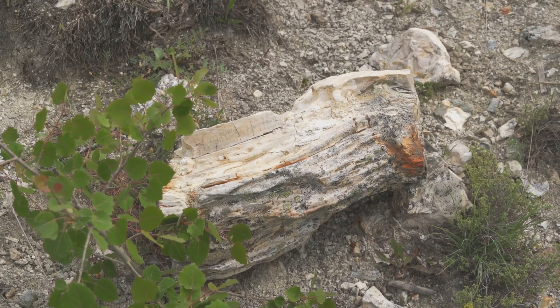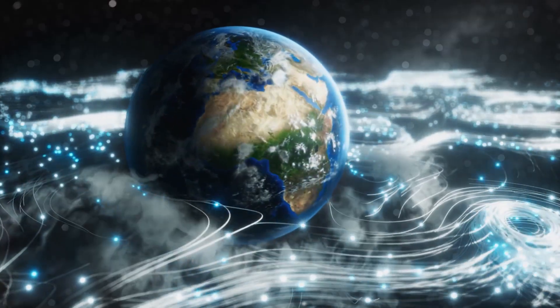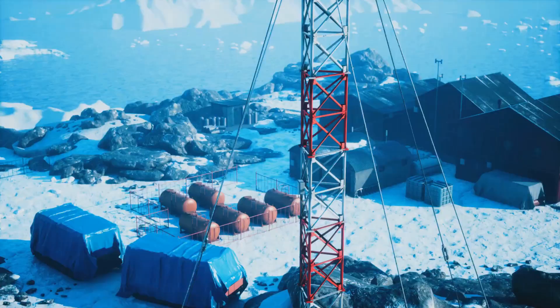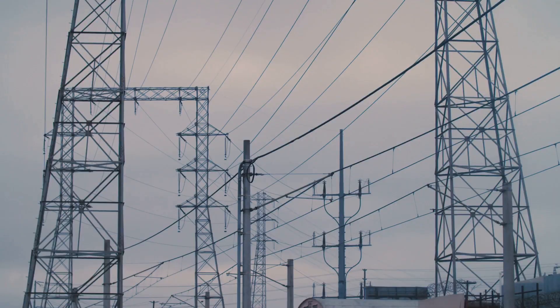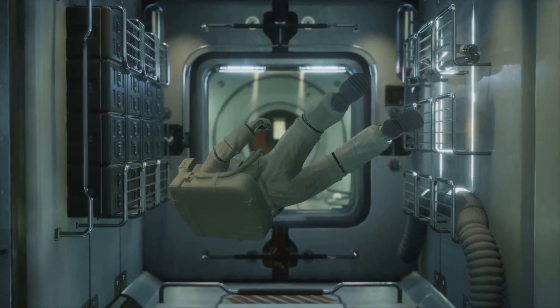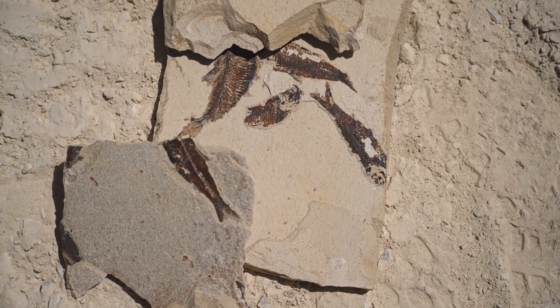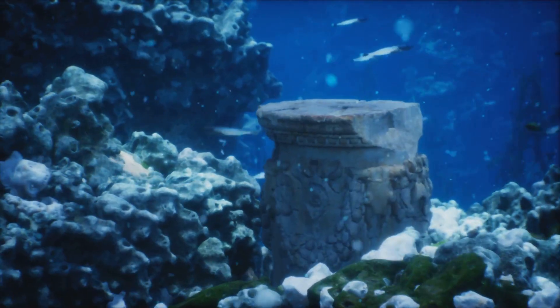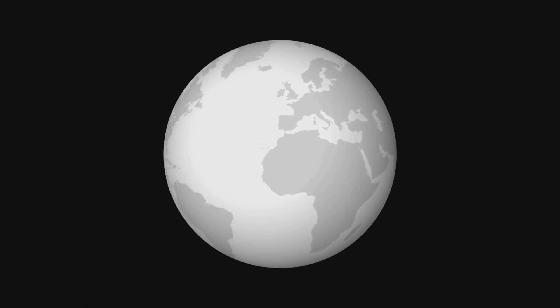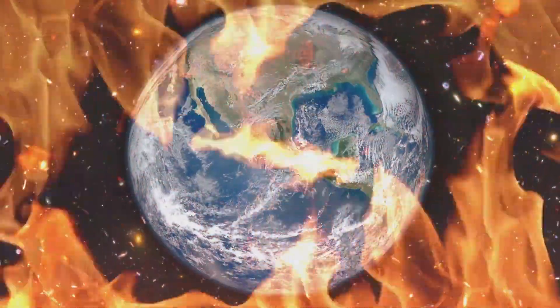Life on Earth has survived past reversals, but our technology has never faced such a challenge. We would need to adapt, shielding satellites, protecting power grids, and safeguarding astronauts. The last full reversal was 780,000 years ago, long before civilization. We would be the first technological society to experience this planetary shift.